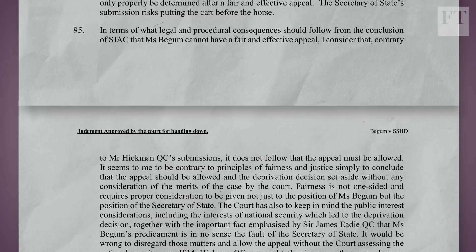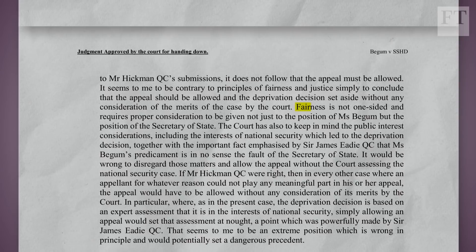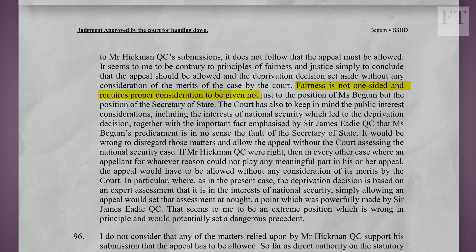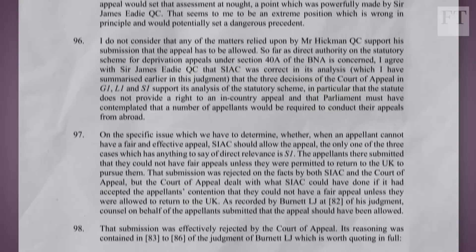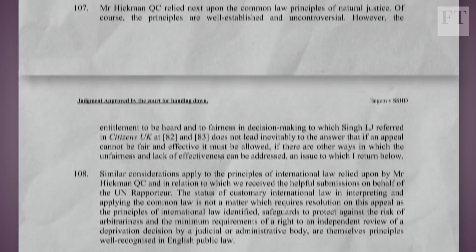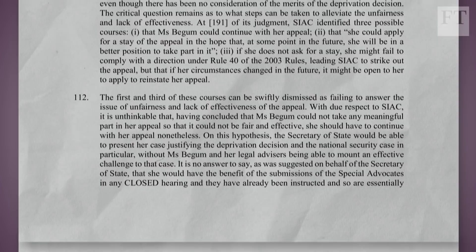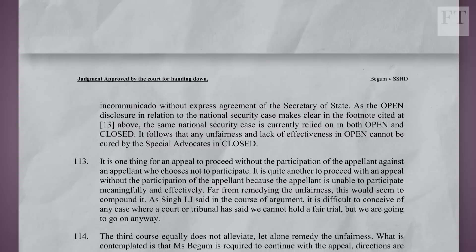How did the Court of Appeal approach this? Going to paragraph 95, there is a key sentence: 'Fairness is not one-sided and requires proper consideration to be given, not just to the position of Ms. Begum, but the position of the Secretary of State.' What the Court of Appeal is saying is that if they granted Ms. Begum's appeal just because she can't participate, that would be unfair to the Secretary of State. But if she cannot participate, that would be unfair to her. There would be unfairness on both sides, and so the Court of Appeal — contrary to much political criticism — doesn't want to just grant her an appeal, but wants to ensure a decision fair to both Ms. Begum and to the government.